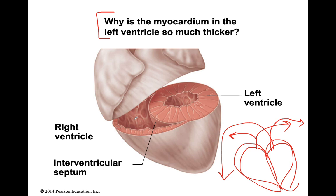The right ventricle pumps blood a few inches to the lungs, so you don't need that much musculature or such high pressure. But the left side of the heart needs a lot of musculature to generate that 120 mmHg of pressure to pump blood all the way out to the brain, arms, legs, and toes. That requires a good amount of muscle. Be sure to know the reasons why the myocardium is different on the left and the right side.